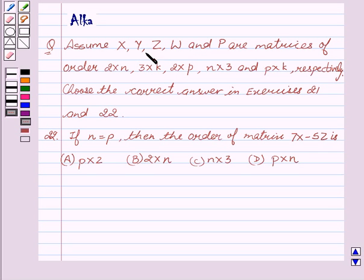Our given question is assume X, Y, Z, W and P are matrices of order 2 cross n, 3 cross k, 2 cross p, n cross 3 and p cross k respectively.